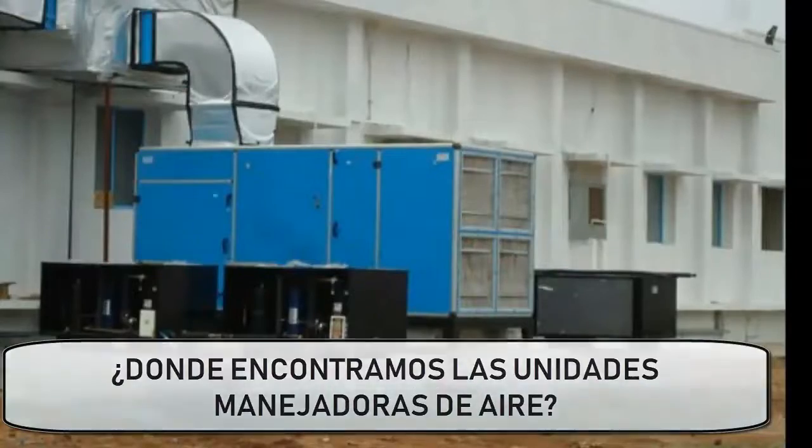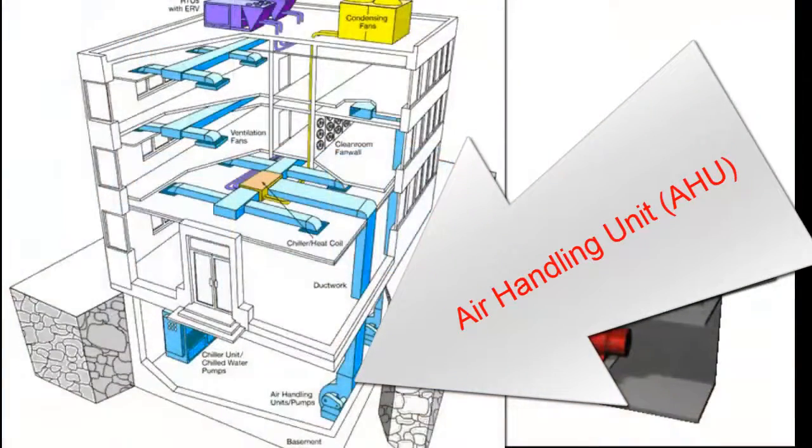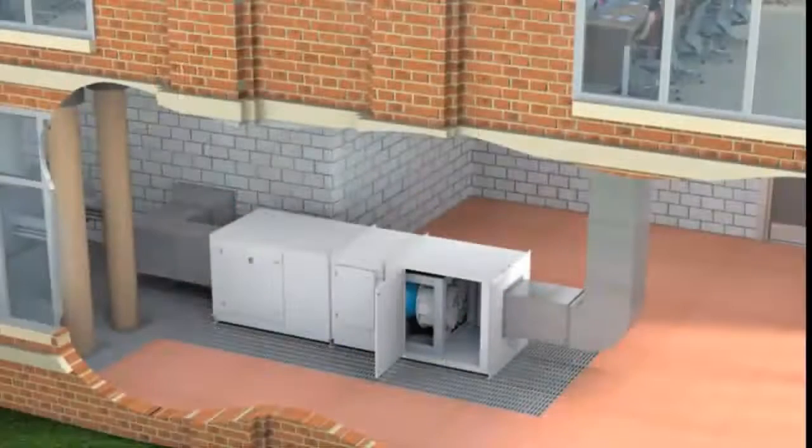Where do we find Air Handling Units? These units are located in medium to large buildings and premises, usually in the basement, on the roof, or on the floors of the building.